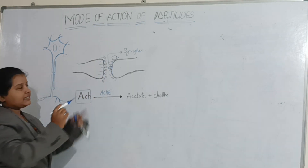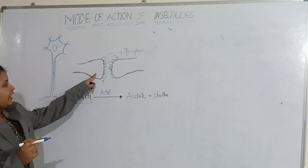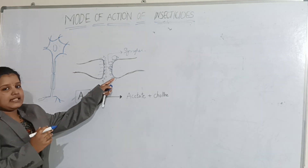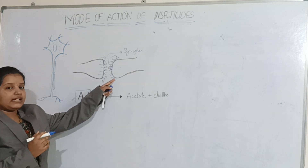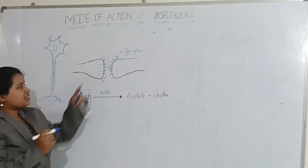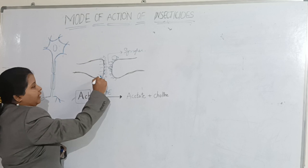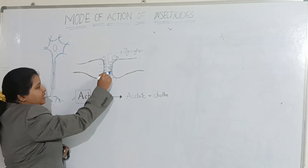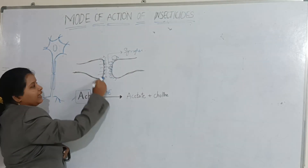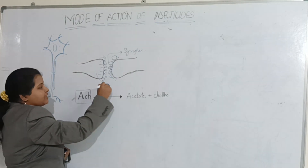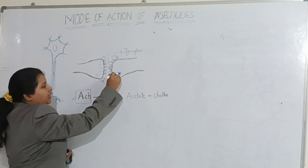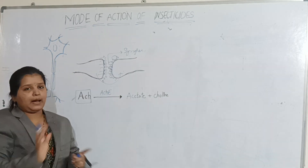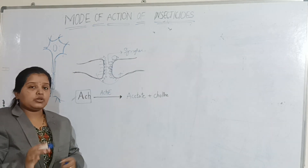When the acetylcholine from one neuron goes and binds to the receptor of the other neuron, the message is conveyed. When the acetylcholine sits on the receptor, the message is conveyed from this neuron to the other neuron, and message conveying is completed.